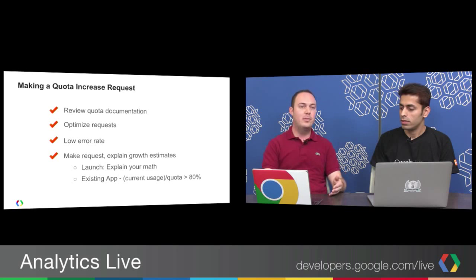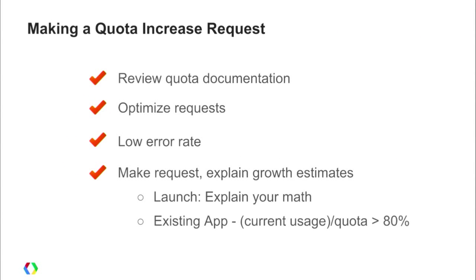Use the APIs console to check those values. When you make the request, explain your growth estimates — how many users you're planning, how many requests per user on average. If it's a new app, that's fine — just let us know. Start with a reasonable quota, launch, and grow from there. The more transparent you are, the easier it is for us to review. For an existing app, we'd like to see you're using around 80% of your quota before making the request.